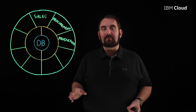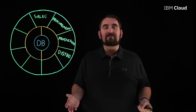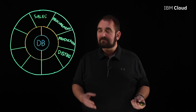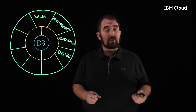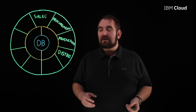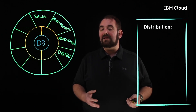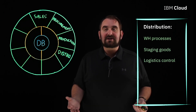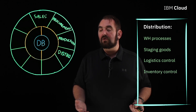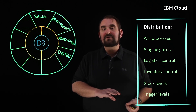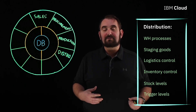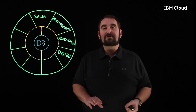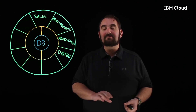After production, you might have a distribution module. That module is concerned with how you get your finished products from point A to the customer's door, or just from point A to the loading dock door. The distribution module covers warehouse processes, staging goods, movement of finished goods, logistics control, inventory control, stock levels, and trigger levels — all of those things necessary from a logistics perspective, because every business runs with that logistics trail.